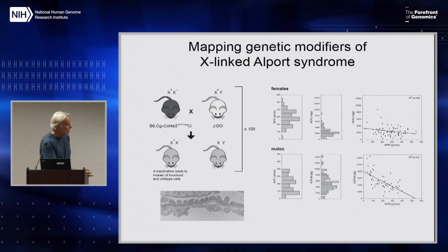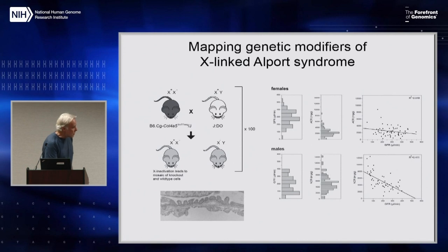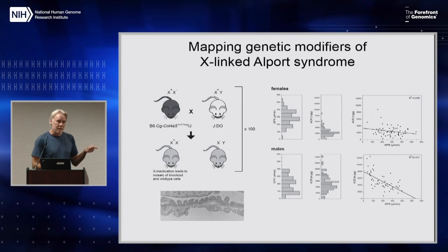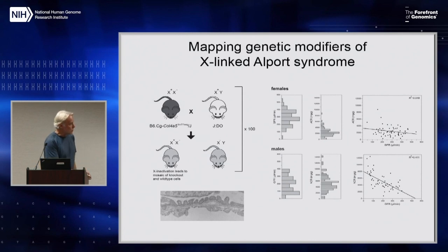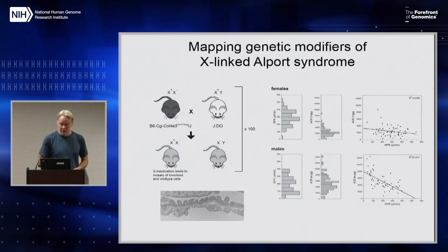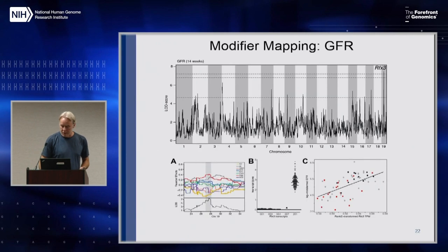We get females that are het, and we get males that are hemizygous for the mutation. The mutation causes a disruption in the basement membrane in the kidney, which causes the kidneys to be leaky — so protein gets into the urine. It also causes inflammation and the glomeruli drop off, so you get reduced filtration.